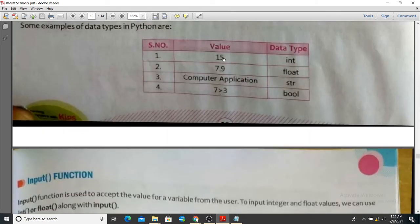Now let's give you an example. Like 15 is an integer. 7.9 is a decimal, it's a float. Computer application is a string. And you can leave boolean.